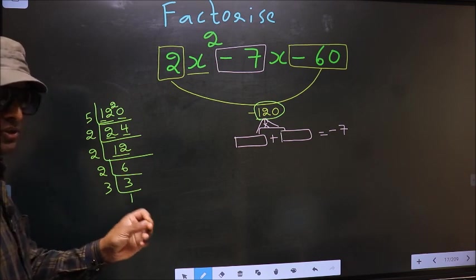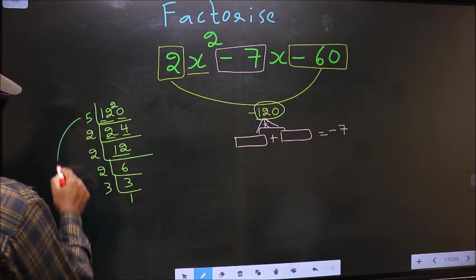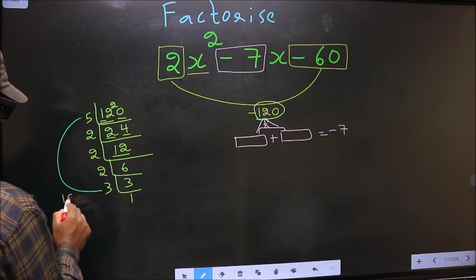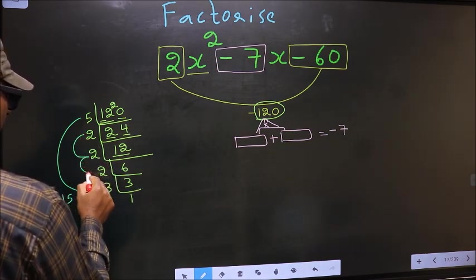Now the two numbers should be 5 times 3 equals 15, and the second number is 2 times 2 times 2 equals 8.